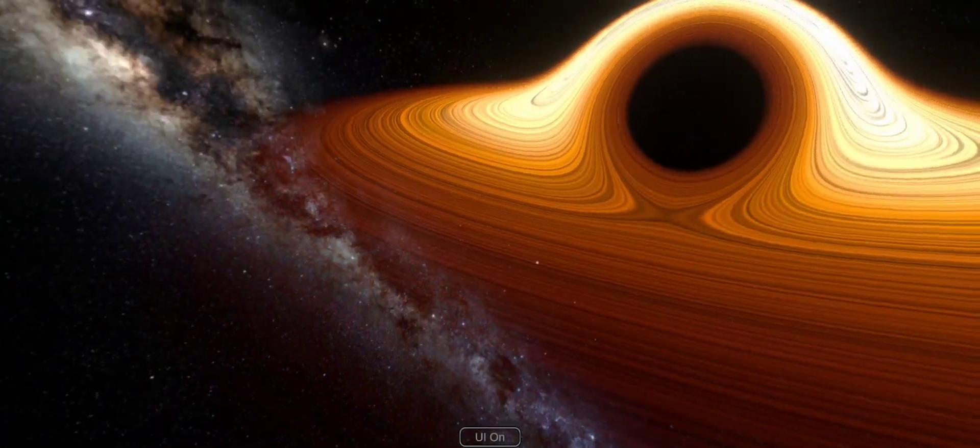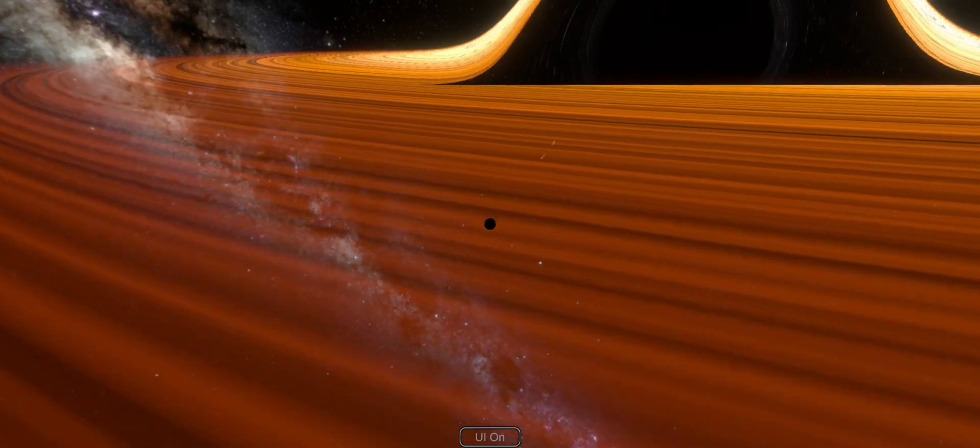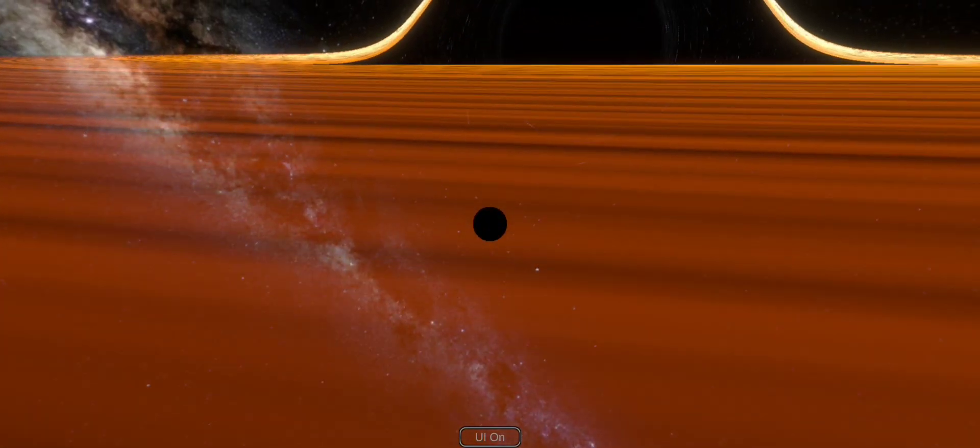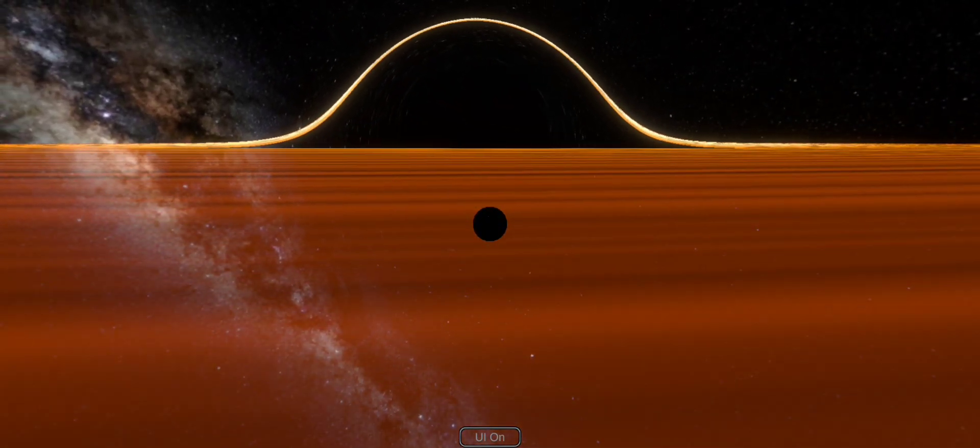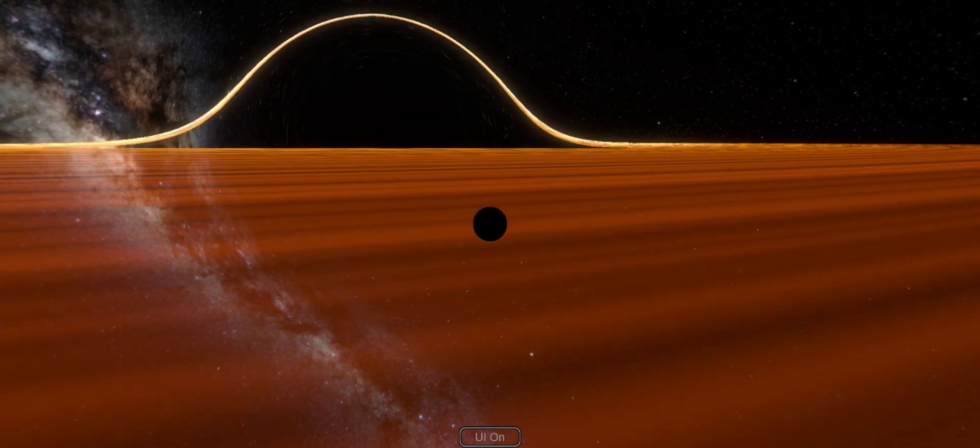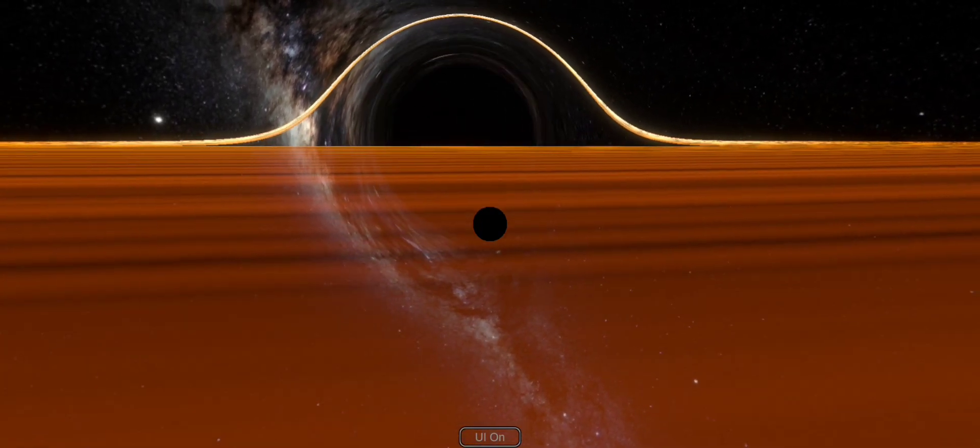The black hole's gravity is so intense that not even light can escape. The glowing ring we see is the accretion disk, gas and dust spiraling at near light speed, heating up to millions of degrees.